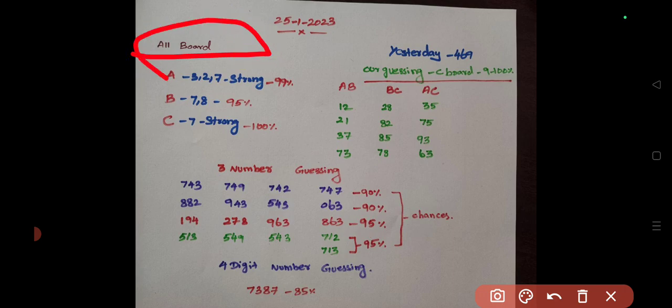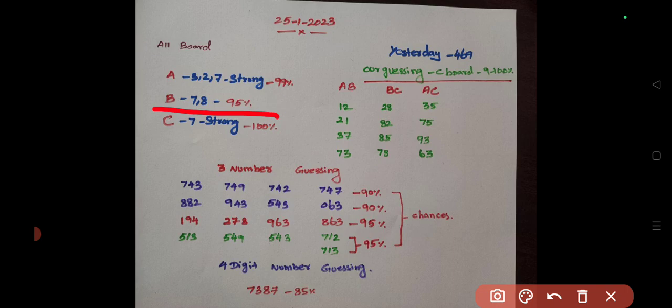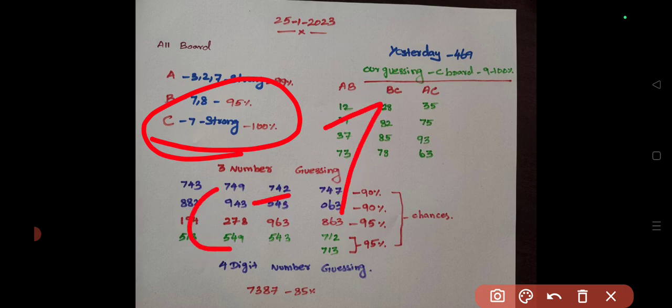When you say for all A to 3 and 2 7, you will give us 99% at that point. B to 7 and 8, you will give us 95% at that point. C to 7 confirm, you will give us 8 and 8.